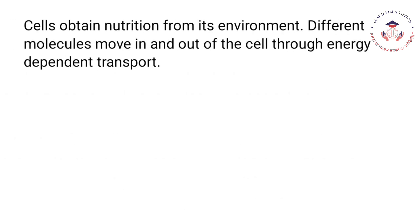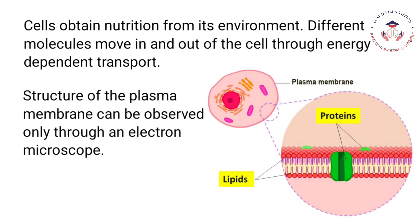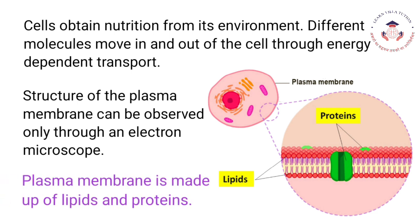Cells obtain nutrition from their environment, and different molecules move in and out of the cell through energy-dependent transport. The structure of the plasma membrane can be observed only through an electron microscope. The plasma membrane is made up of lipids and proteins.